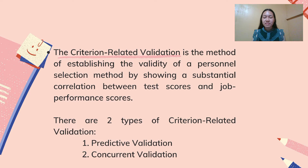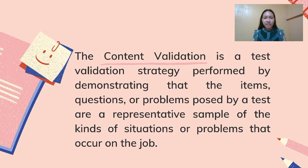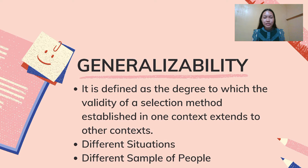There are two types of criterion-related validation. First, predictive validation seeks to establish an empirical relationship between the applicant's test scores prior to being hired and their eventual performance on the job. Second, concurrent validation is a test given to people already in the job, then correlating test scores with existing measures of each person's performance. The content validation strategy demonstrates that the items, questions, or problems posed by a test are a representative sample of the kinds of situations or problems that occur on the job. This is best used for small sample sizes.